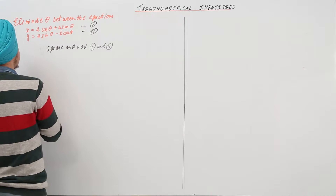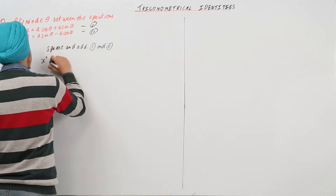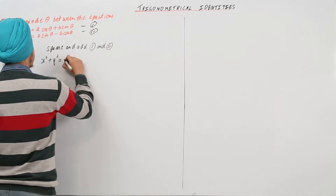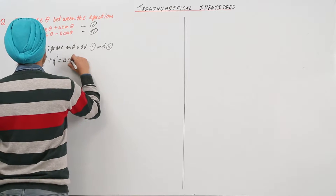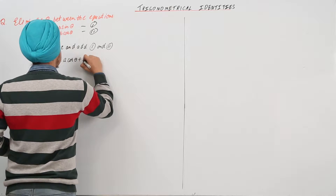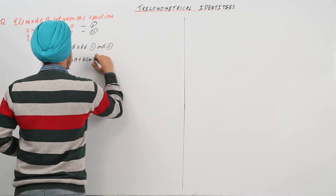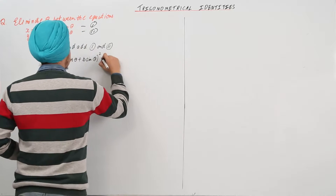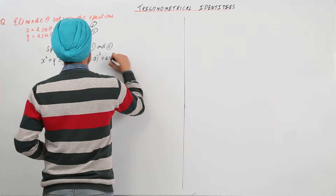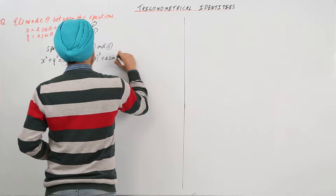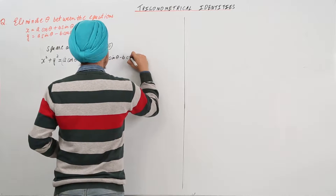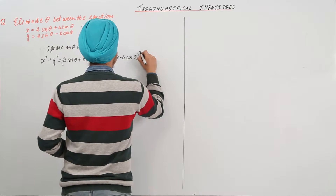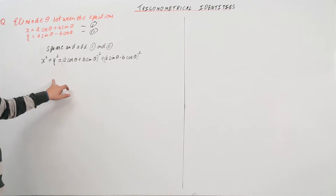This will be equal to: x square plus y square is equal to a cos theta plus b sin theta, whole square, plus a sin theta minus b cos theta, whole square.